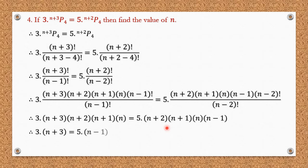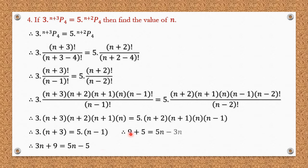Multiplying out: 3(n+3) = 5(n−1) gives 3n + 9 = 5n − 5. Rearranging: 9 + 5 = 5n − 3n, so 14 = 2n, and therefore n = 7. The answer to this question is n = 7.